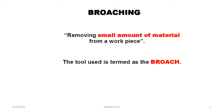Next we can study about the broaching machine. What is a broaching machine? The broaching machine is a machining process in which the excess material from the workpiece is removed by broaching or drilling. A multipoint cutting tool called a broach moves across the surface of the workpiece, removing a small amount of material. The tool used is termed as a broach.